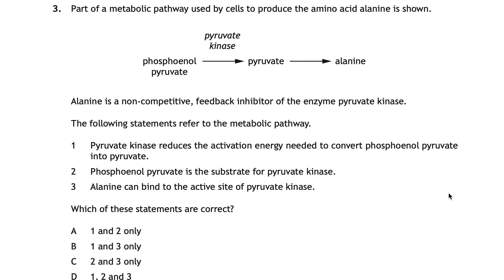The correct answer for question three is A — one and two are correct, three is incorrect. Pyruvate kinase is the enzyme, and enzymes reduce the activation energy required — in this case to convert phosphoenolpyruvate into pyruvate, so statement one is correct. Since pyruvate kinase converts phosphoenolpyruvate into pyruvate, phosphoenolpyruvate is the substrate the enzyme acts on, so two is also correct. However, alanine is a non-competitive inhibitor, meaning it does not bind to the active site — it would only bind to the active site if it were a competitive inhibitor. So statement three is incorrect.